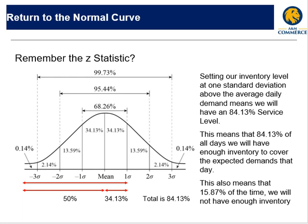If I'm setting my lead time and want to be able to get to at least 84.13%, that also means I'm going to be missing 15.87% of my demand.